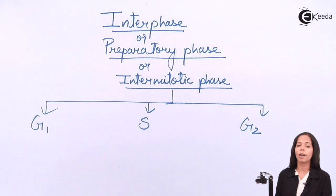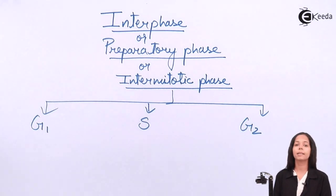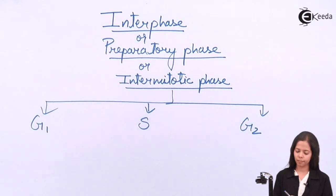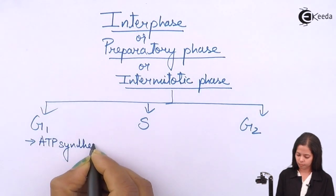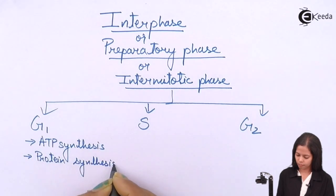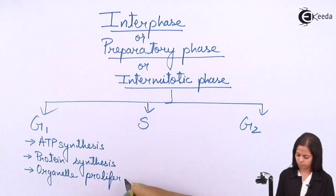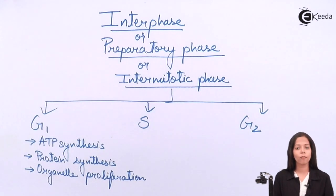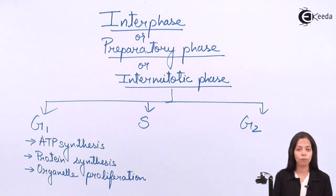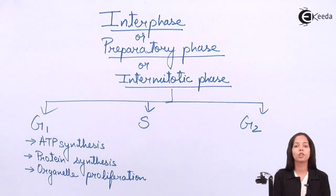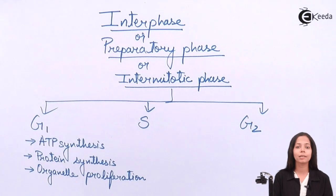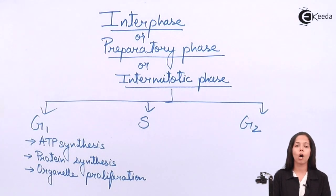In G1 phase, the cell prepares by synthesizing ATP and proteins, and organelle proliferation also takes place. ATP is required for energy, since cell division is a process that needs energy. Proteins are required for the formation of daughter cells. Organelle proliferation means the organelles duplicate and move towards the border side before the cell divides.